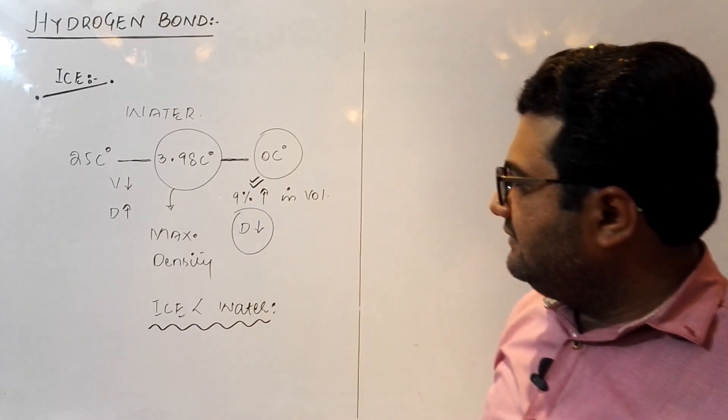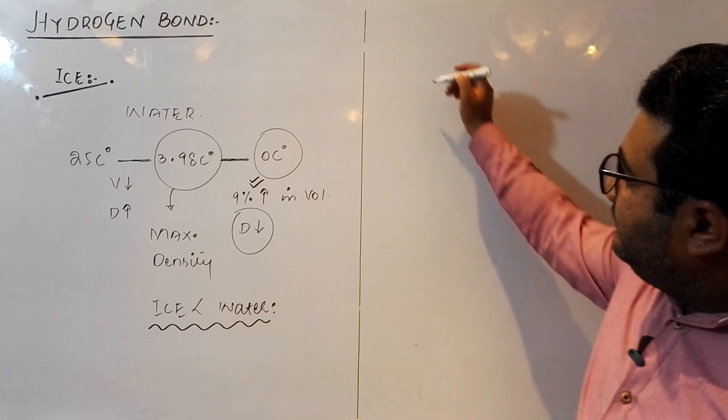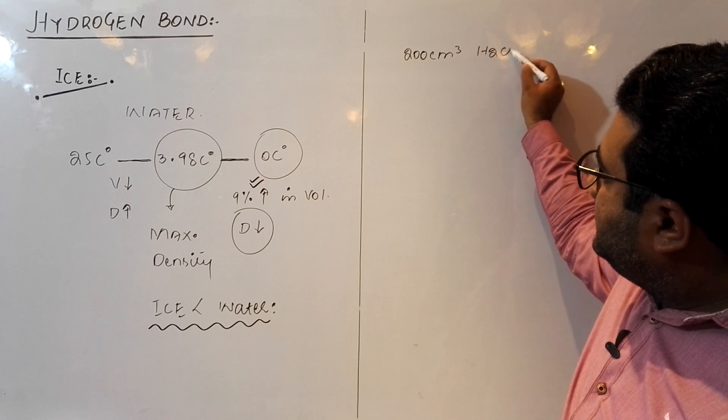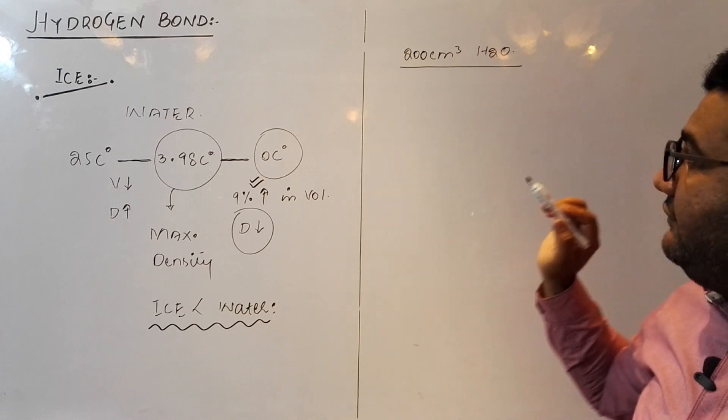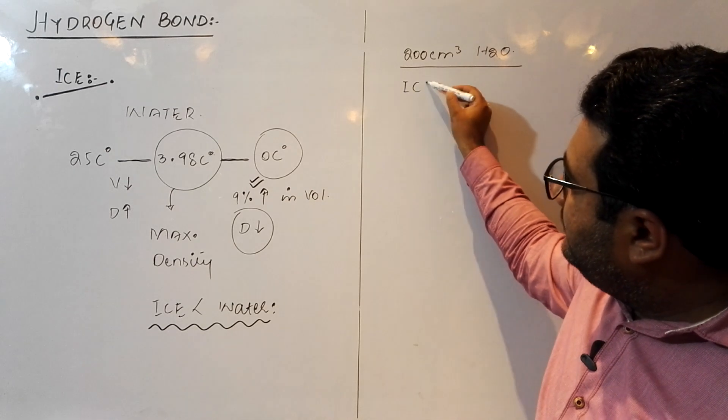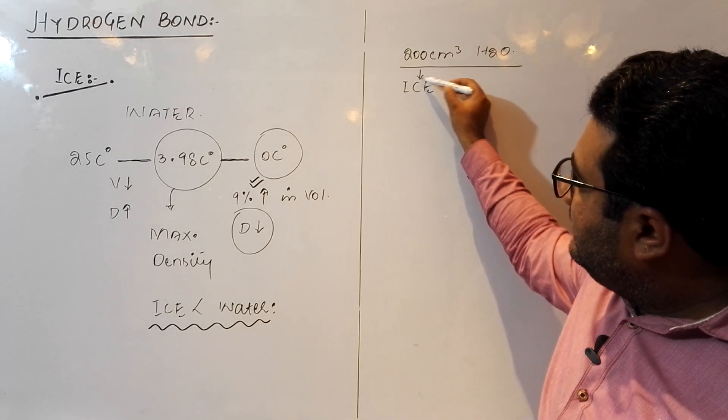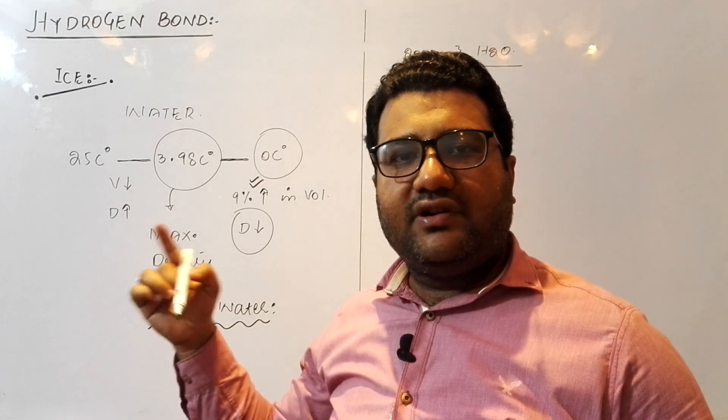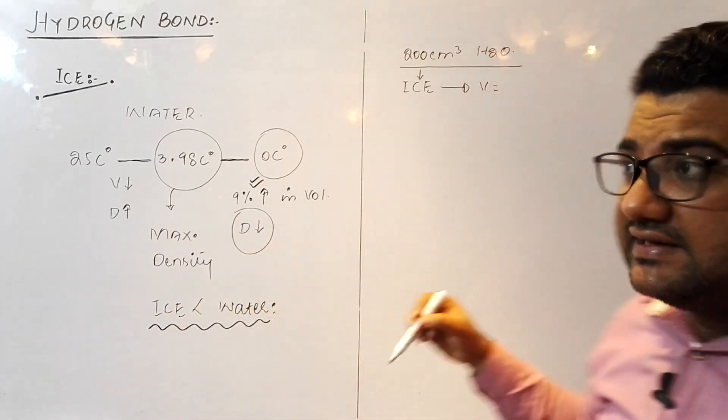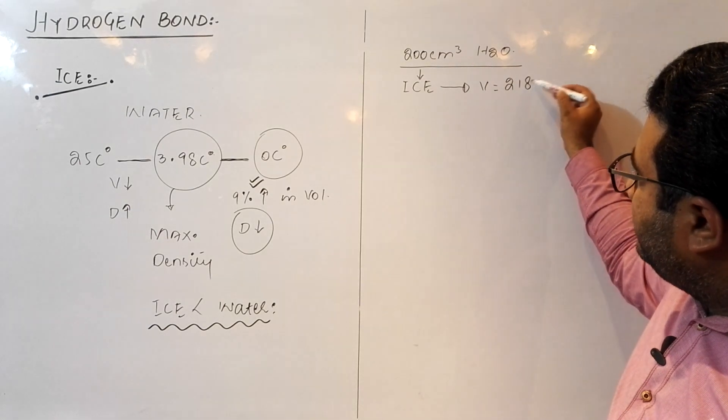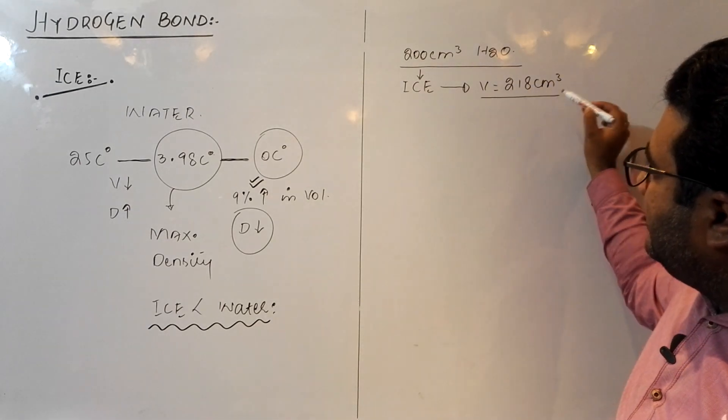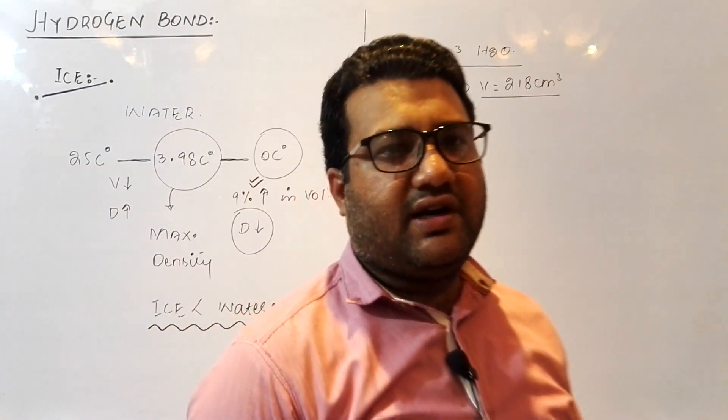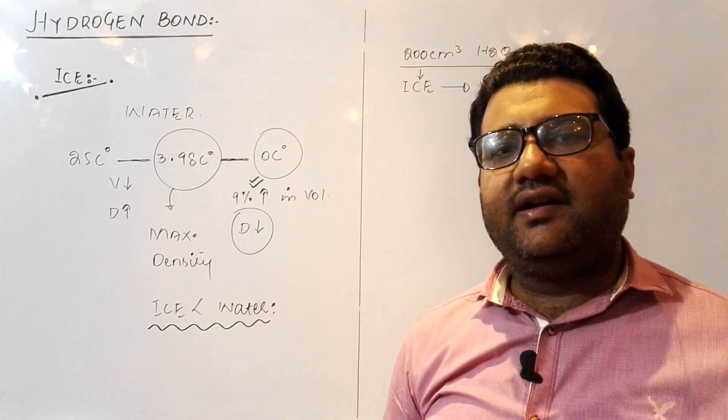As I have said, there is 9% increase in volume. Suppose we have 200 cm³ of water. When we have 200 cm³ of water, we have changed it into ice. What will be the volume of this ice? As there is 9% increase, out of 100, 9 cm³ and out of 200, 18 cm³ will be increased. The volume of ice is approximately 218 cm³. The structure of ice, that is again an important MCQ, is just like that of diamond.